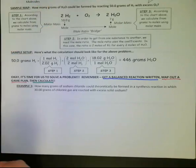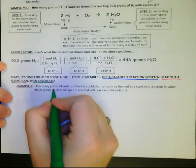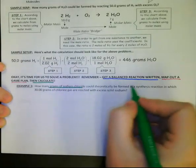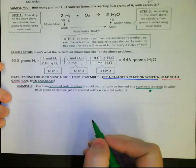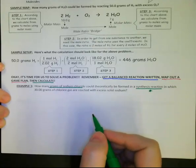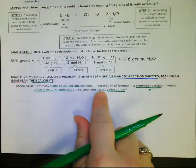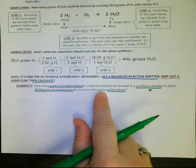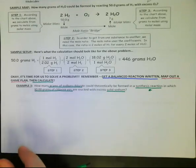The question wants to know how many grams of sodium chloride could theoretically be formed from a synthesis reaction. I have 30 grams of chlorine gas are reacted with excess solid sodium. Right now we just need to know that this word excess means that I have enough for this reaction to happen.